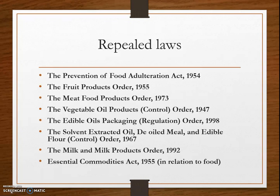The Vegetable Oil Products Control Order 1947 and the Vegetable Oil Products Standard and Quality Order 1975 were combined to form the Vegetable Oil Products Regulation 1998. This act was formulated for the proper regulation on manufacture and distribution of vegetable oils. Next is the Milk and Milk Products Order 1992.